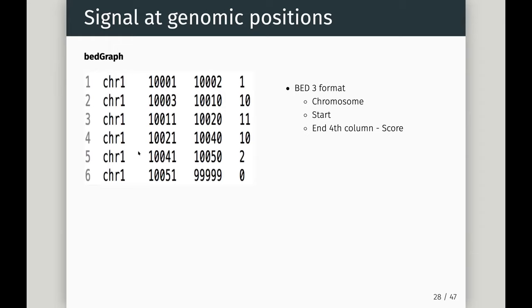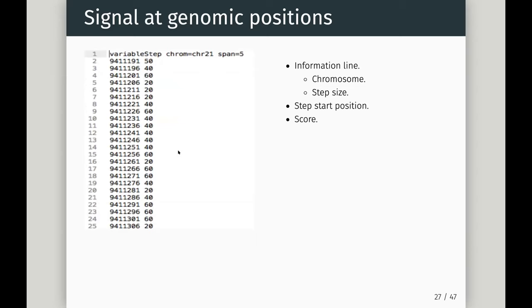To represent that same region in wiggle would take a lot of text. GFF (General Feature Format), and its very similar counterpart GTF, is used to contain genome annotation. It looks a lot like a BED file with chromosome, start, and end, but has additional information such as source, feature type, score (with a dot meaning no score), and importantly key-value pairs separated by semicolons, e.g., a feature name and the gene it belongs to.